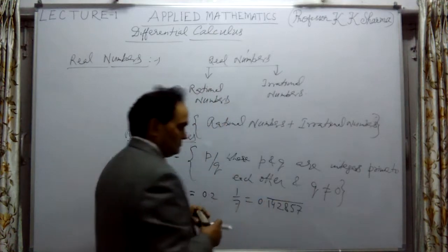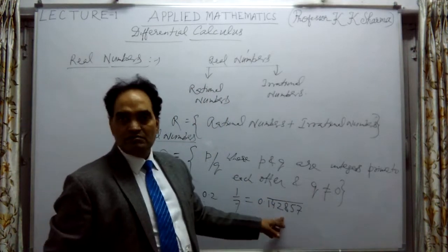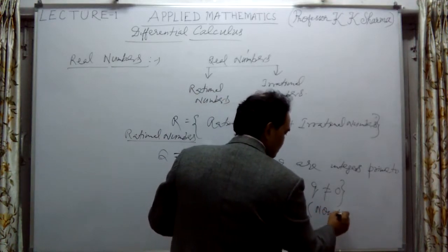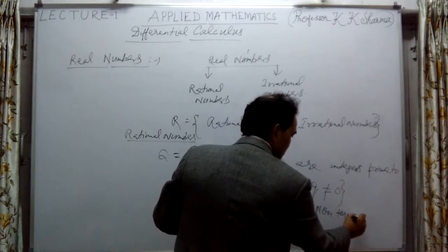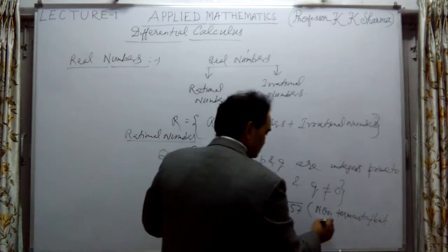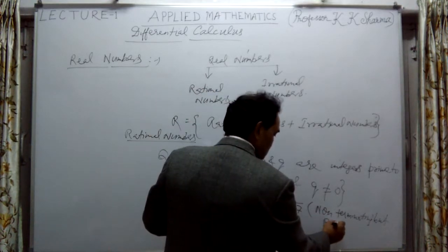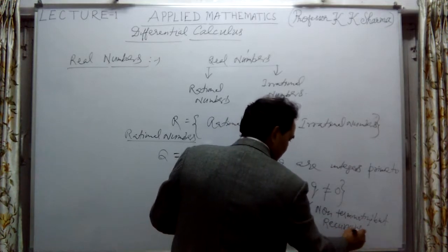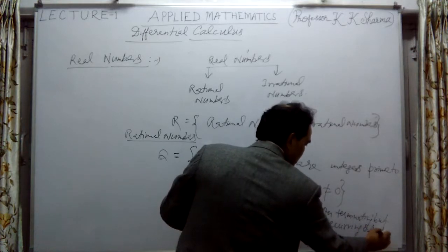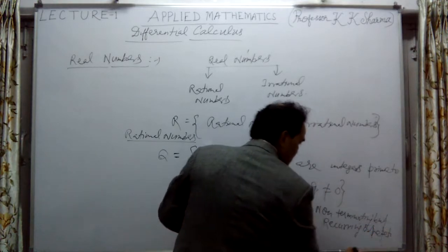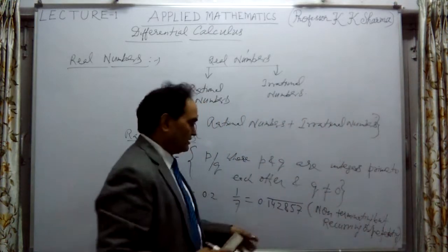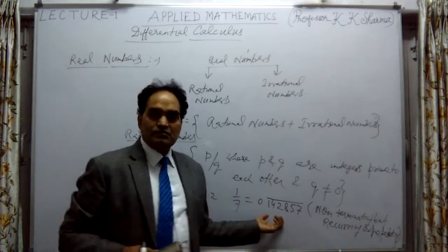This number is non-terminating but recurring. Non-terminating but recurring means the same number will repeat after a certain interval. This is also a rational number.